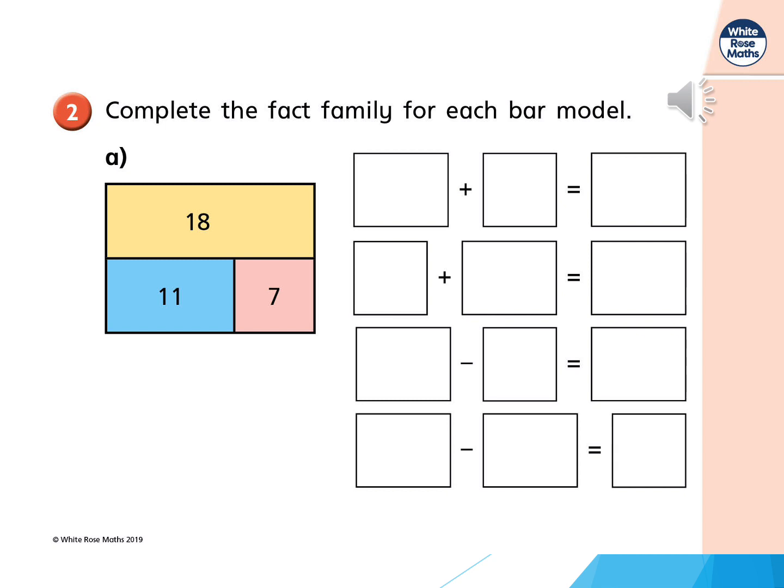This time, just to give you a little bit more of a challenge, we've got a bar model here. So this is exactly the same as a part-whole model. The top bar shows us the whole and the amount that you have all together. You've got the blue bar that shows you 11 and then you've got the red bar that shows you 7. So can you complete the fact families for each bar model?